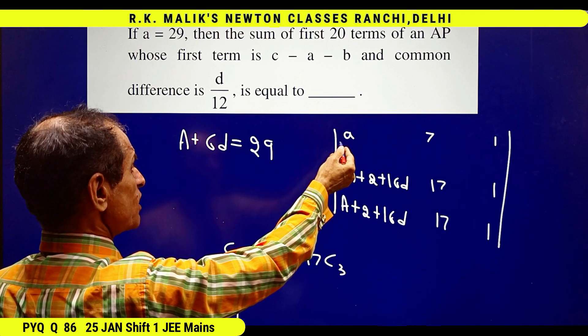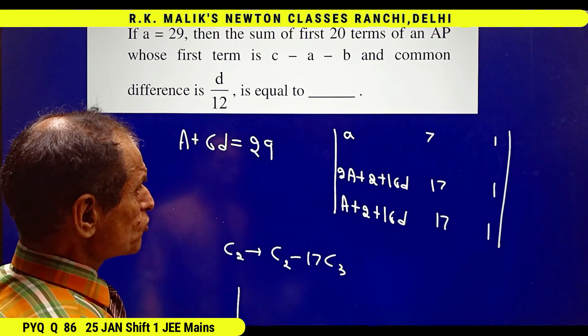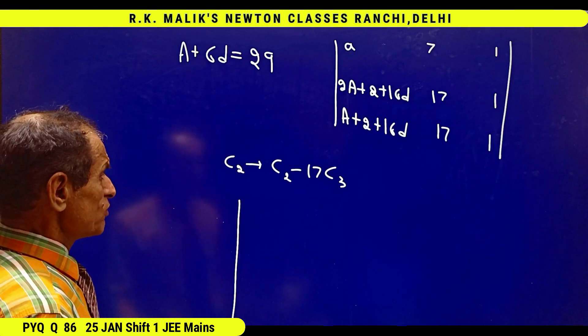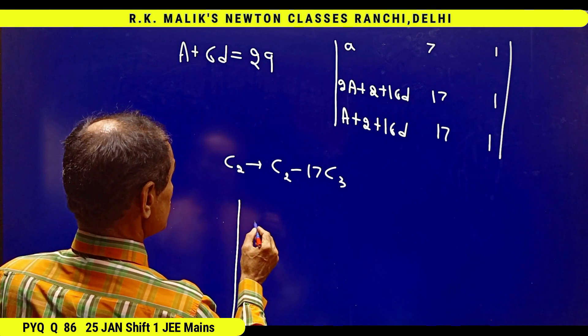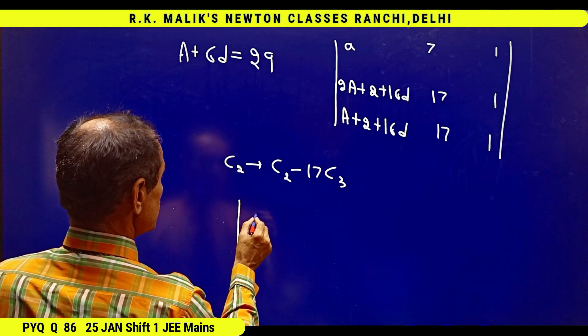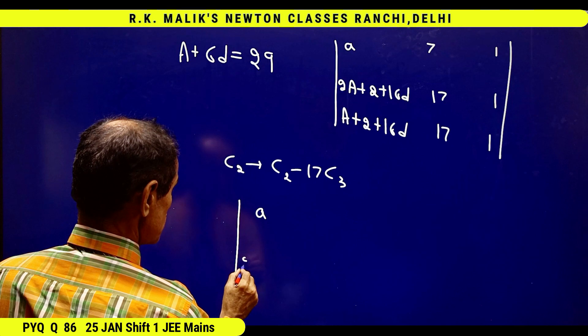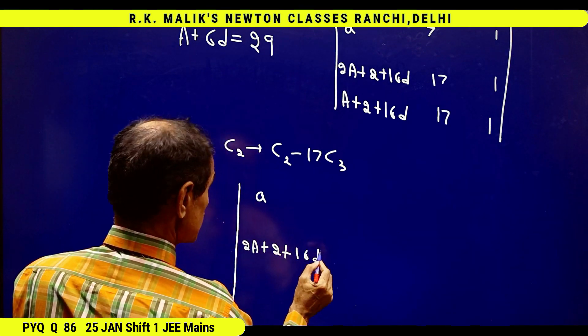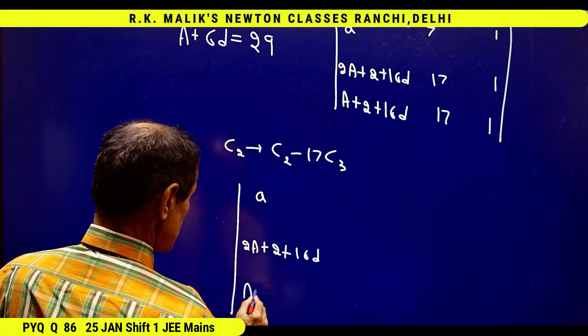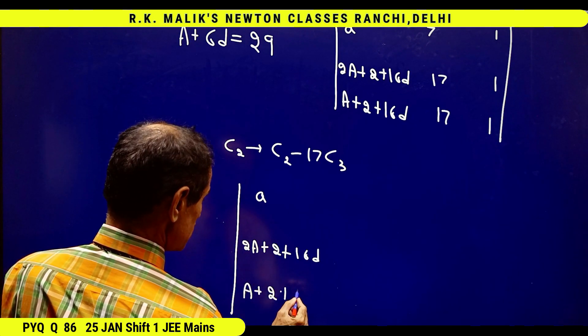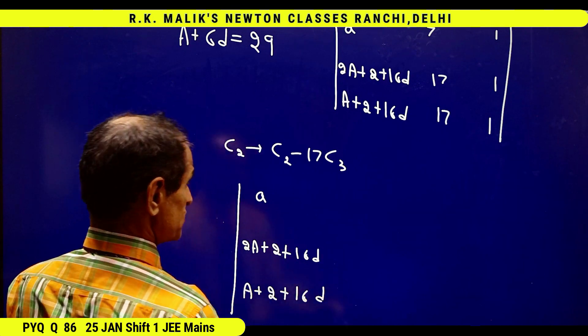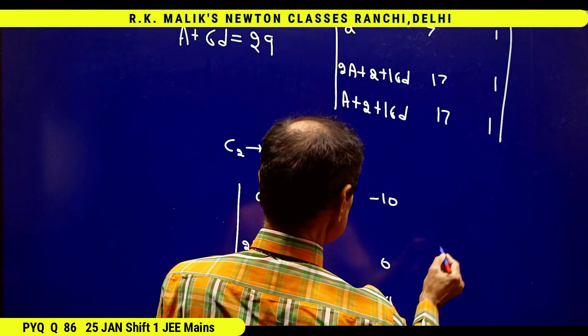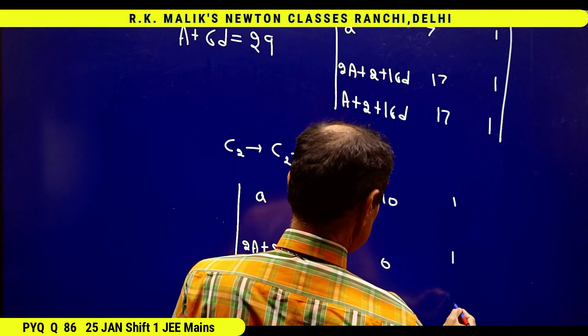Here now: a, 2a plus 2 plus 16d; 2a plus 2 plus 16d minus, with elements 1, 0, 0 and 1, 1, 1.